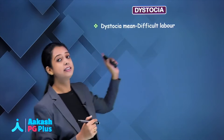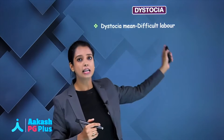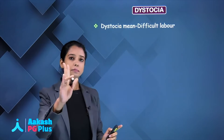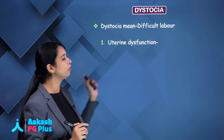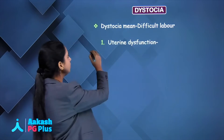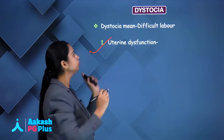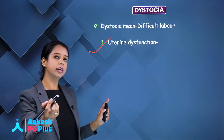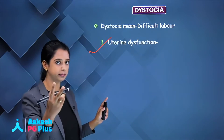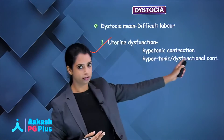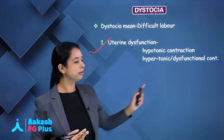What is dystocia? Dystocia means difficult labour. It can occur due to basically two reasons. One is uterine dysfunction, which is the most common cause of difficult labour. Uterine dysfunction can be of two types. What is hypotonic contraction?